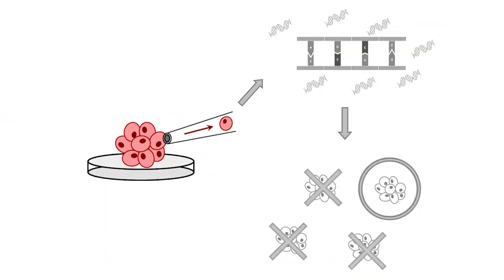PGD is done with in vitro fertilization or IVF. In a lab, a few cells are removed from each embryo and tested for the genetic condition. Only embryos that are negative for that condition are used for implantation.